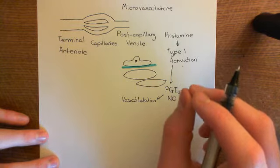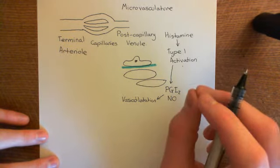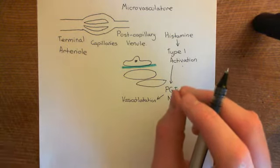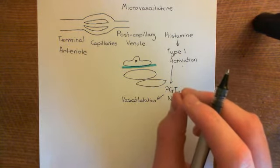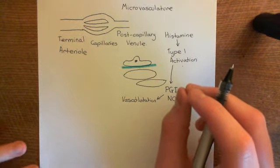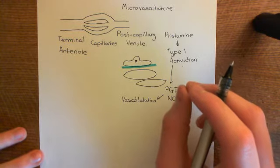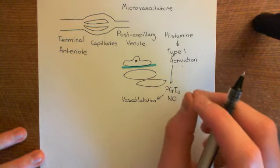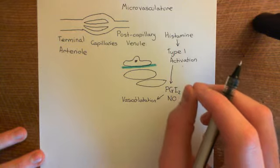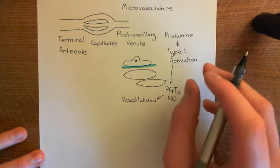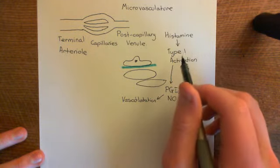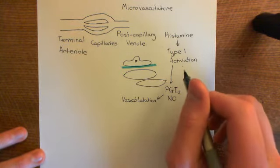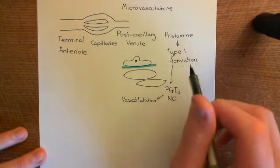The body thinks it has encountered a terrible pathogen. It's trying to launch a protective response: constricting the bronchi to prevent breathing in more allergen and stop it reaching the alveoli and bloodstream. It is also causing inflammation in the lamina propria where the allergen is, to bring immune cells from the blood into the lamina propria to destroy the perceived pathogen.